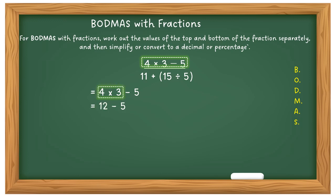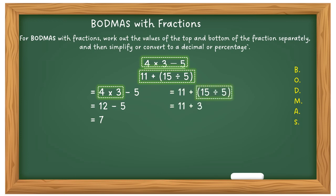So 4 times 3 is 12, 12 minus 5 gives you the top part of the fraction. Then you separate out the second part: do the brackets first — 15 divided by 5 is 3, then 3 plus 11 is 14. Put the fraction back together and your final answer is 7 over 14. Depending on the question you may be asked to simplify — that's the same as a half — or convert to a decimal: 7 ÷ 14 = 0.5, multiply by 100 gives 50 percent.